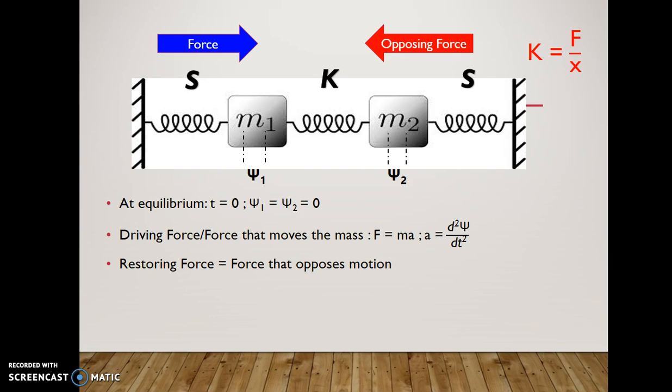Let us first take mass 1 on the left. The restoring force given by the left-hand side spring will be minus S phi 1. The negative denotes that it is in the opposite direction to displacement.